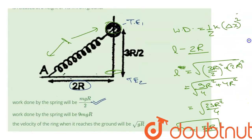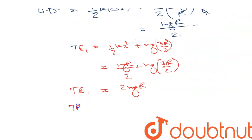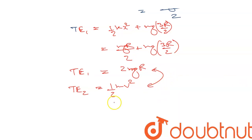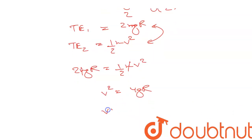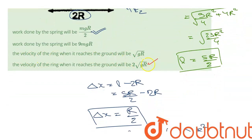When the ring reaches the bottom, the spring is un-stretched and the ring has zero height, so the only energy is kinetic: ½mv². Equating: 2mgR = ½mv², so v² = 4gR, giving v = 2√(gR). Therefore option D is also correct.